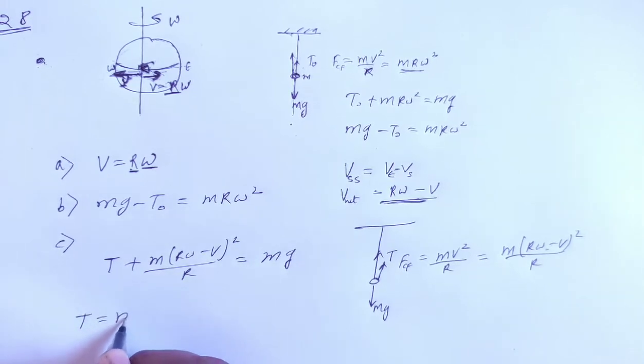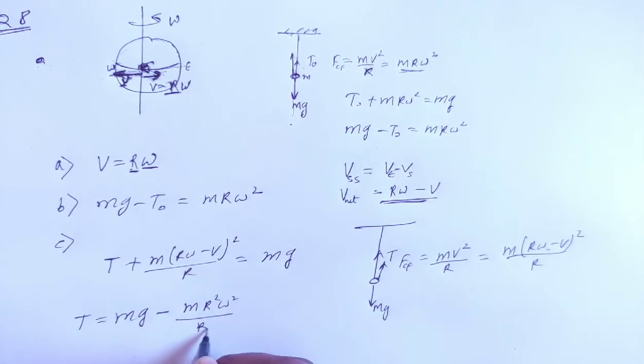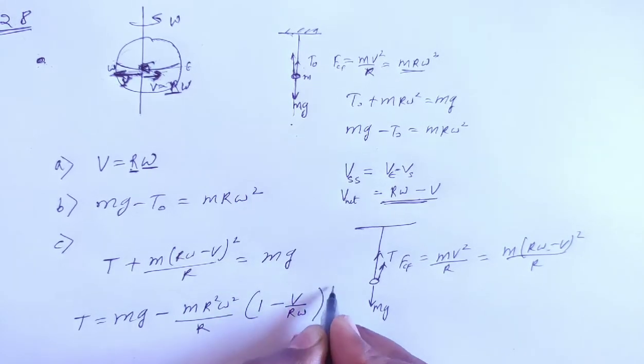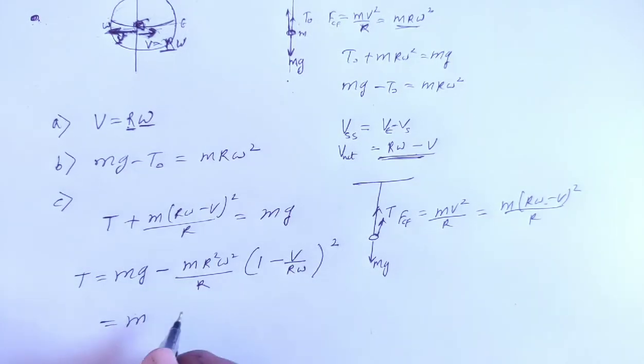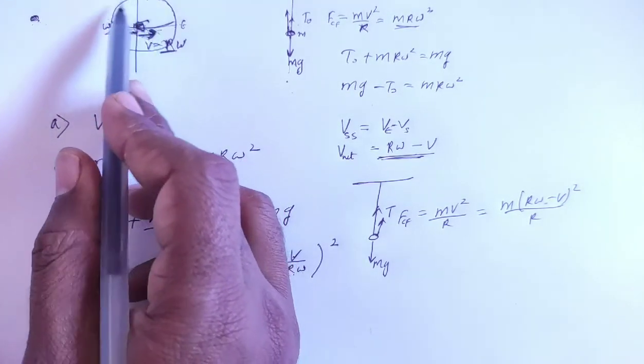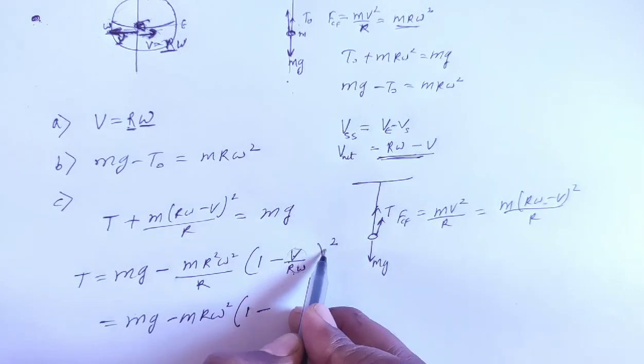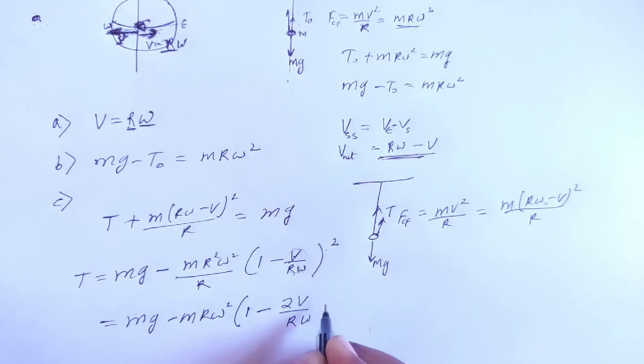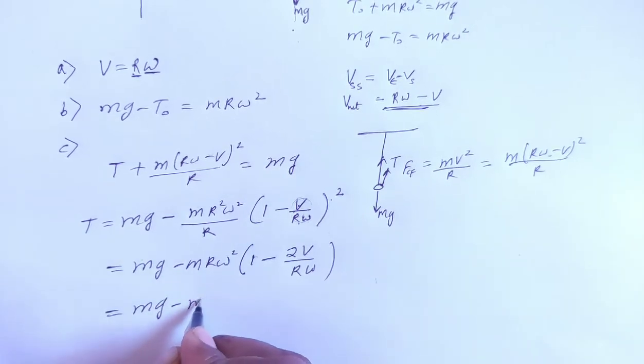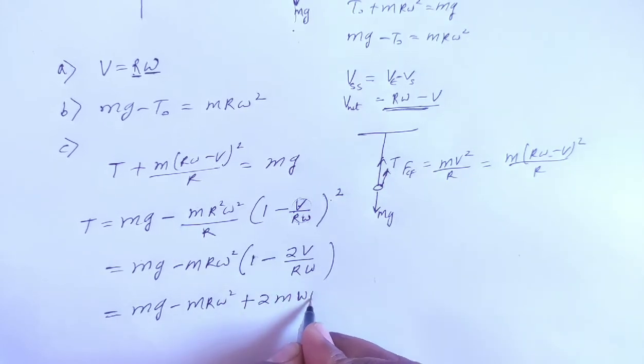So T equals mg minus - taking out R and omega - m R omega² times (1 minus v / R omega)². Since v is very small and R omega is large, when such situation occurs we apply binomial approximation: 2v / R omega. Multiplying inside gives mg minus m R omega² plus 2m omega v.